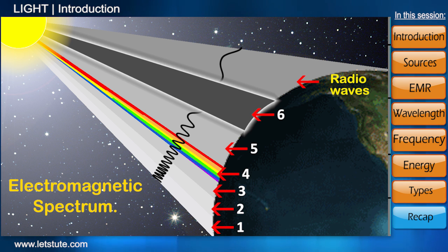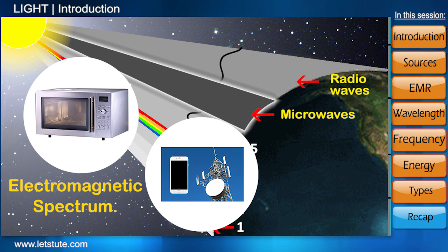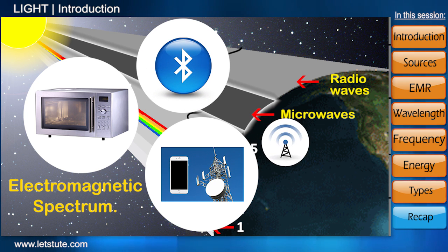Next to radio waves we have microwaves used in appliances like the microwave. They are also used in channels of telecommunication like mobile networks, Bluetooth, and wireless LAN protocols.